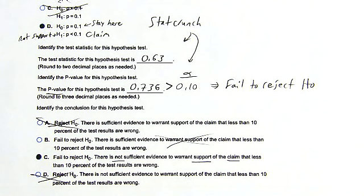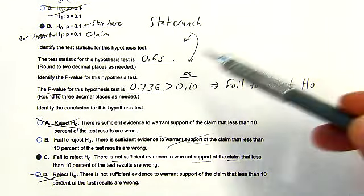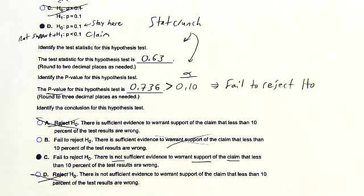The procedure is just lots of practice — use technology to get the numbers, interpret the numbers, and decide whether the experiment gives evidence to support a claim or not.